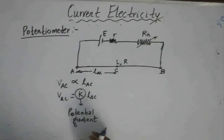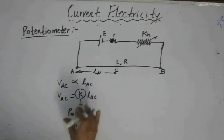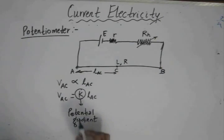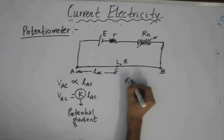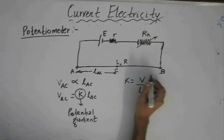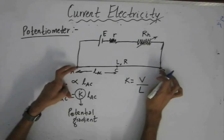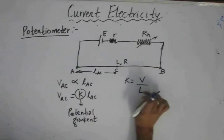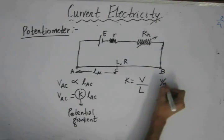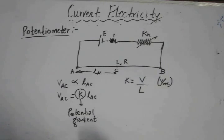Now, if you want to derive the formula for the potential gradient for this circuit: the potential gradient is given as V by L, where V corresponds to the total potential difference across the potentiometer wire of length L. So this is basically volts per meter — that is the unit of potential gradient.